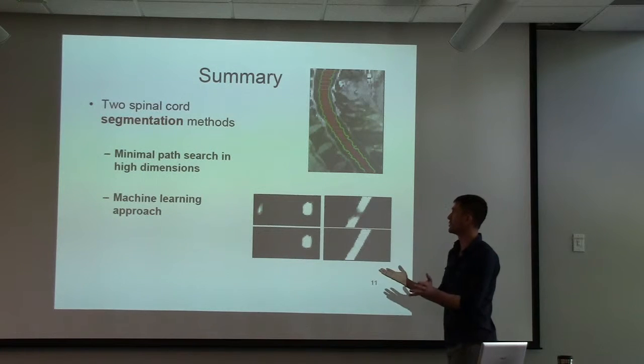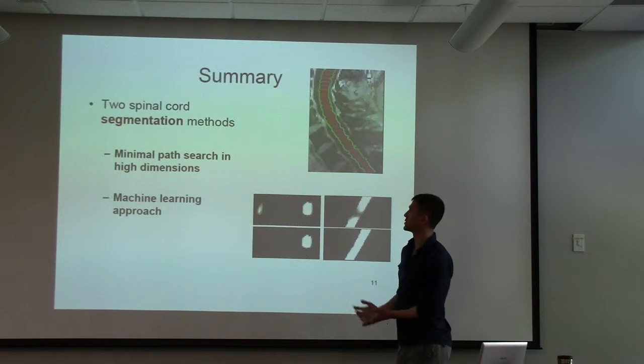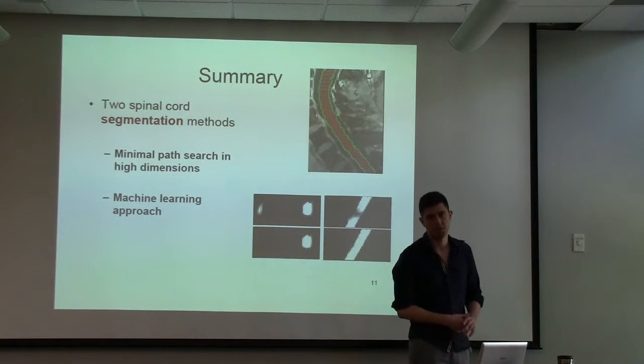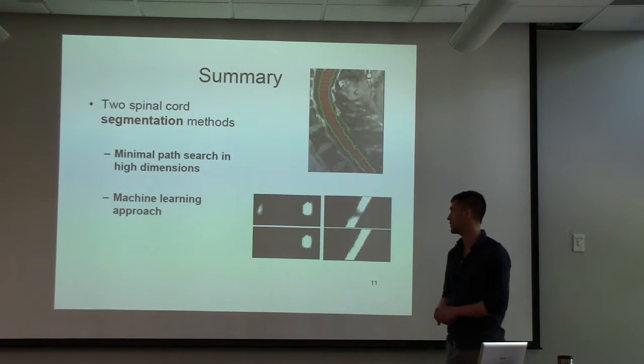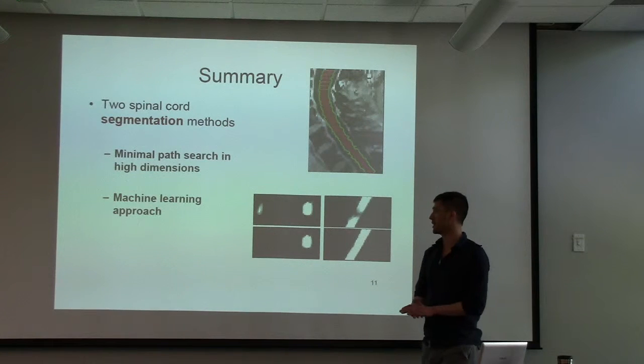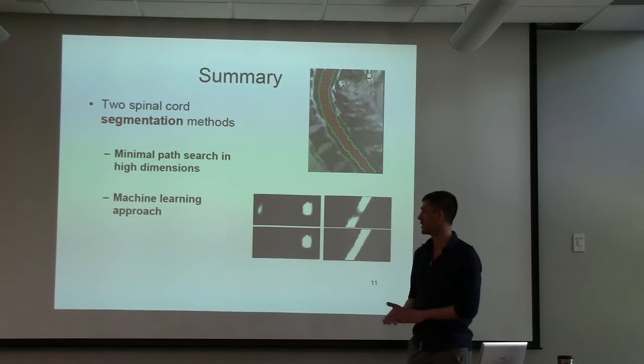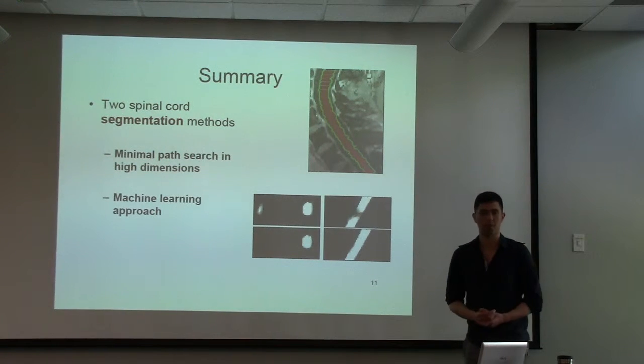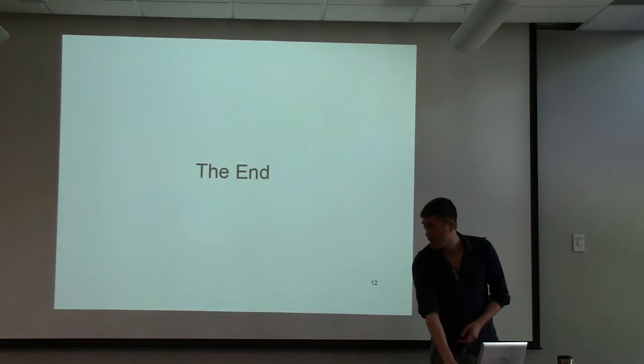So to give a summary, we presented two spinal cord segmentation methods. The first one was a minimal path search in high dimensions and the second one was a machine learning approach. We can conclude that at least for this specific dataset that machine learning approach produces superior results to the first method. And that's it.